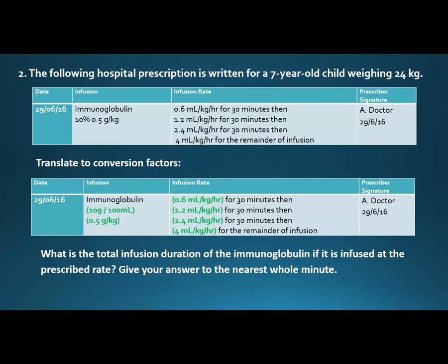What we have are three time segments — and when I say times I mean that quite literally — 30 minutes, 30 minutes, 30 minutes, and then an unknown, which will be the twist at the end that makes it a little tougher. The question asks: what is the total infusion duration of the immunoglobulin if it is infused at the prescribed rate? We know it's 30 plus 30 plus 30 plus something, and we want it to the whole minute.